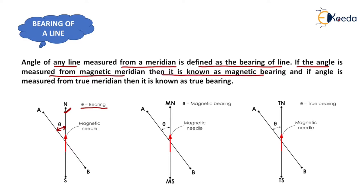If the angle is measured from the magnetic meridian, then it is known as magnetic bearing. If the angle is measured from the true meridian, then it is known as true bearing — shown here, where the angle theta is the true bearing.